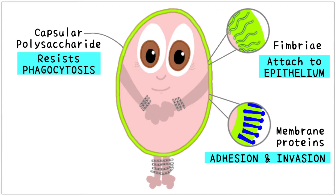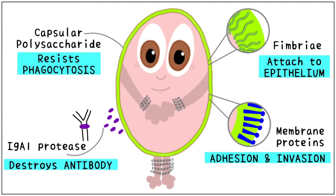The fourth and last factor is the production of IgA1 protease. Immunoglobulin A plays a crucial role in the immune functions of our mucous membranes. This protease destroys this antibody and makes us more susceptible to infection.